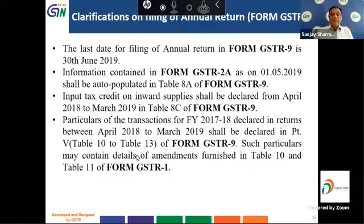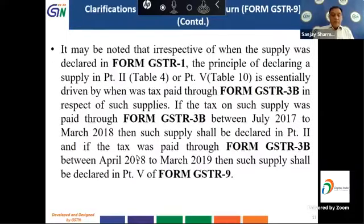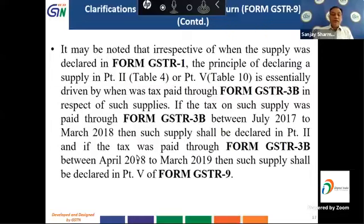Such particulars may contain details of amendments furnished in Tables 10 and 11 of form GSTR 1. Irrespective of when the supply was declared in GSTR 1, the principle of declaring a supply in Part 2 (Table 4) or Part 5 (Table 10) is driven by when tax was paid through GSTR 3B. If tax on a supply was paid through GSTR 3B between July 2017 to March 2018, it shall be declared in Part 2; if paid between April 2018 to March 2019, it shall be declared in Part 5 of form GSTR 9.